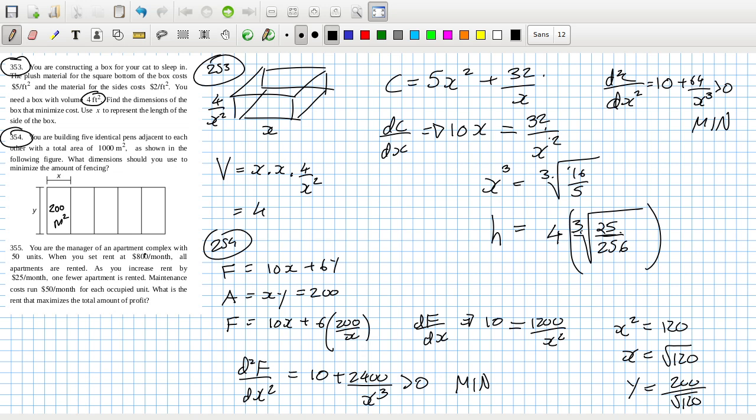All right. You are managing an apartment complex with 50 units. When you set the rent at $800, all apartments are rented. As you increase the rent by $25 a month, one fewer apartment is rented. Maintenance cost is $50 a month for each occupied unit. What is the rent that maximizes the amount of profit?